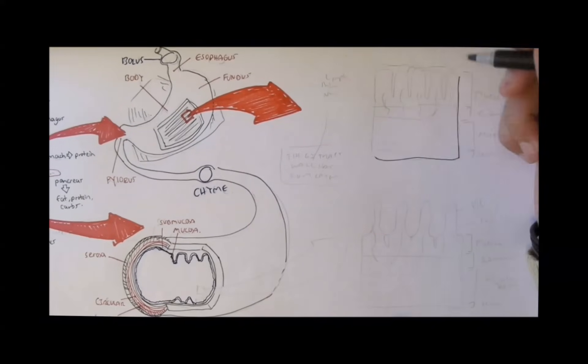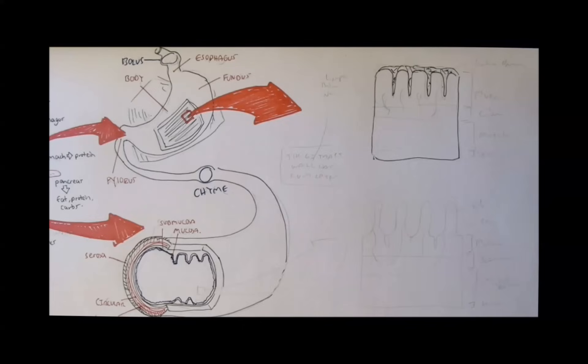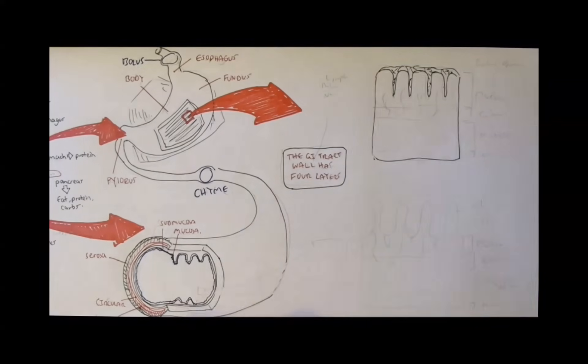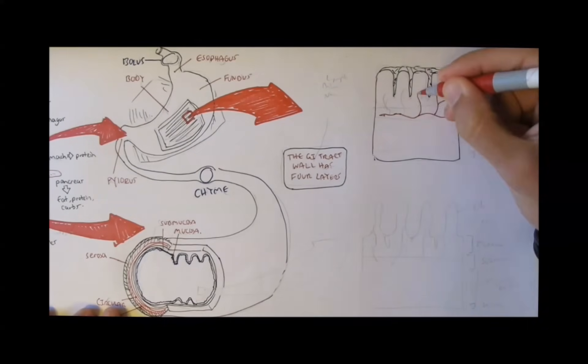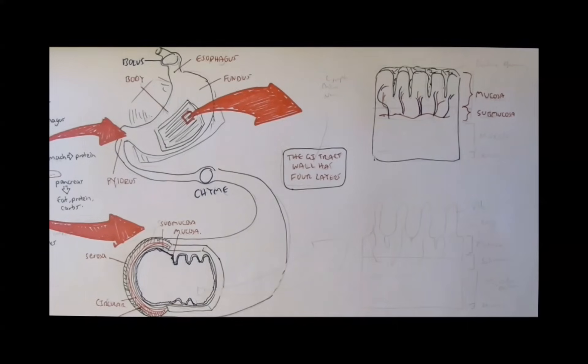And actually it is interesting to note that the gastrointestinal tract is actually all composed of four layers, the stomach included. Now the top bit of the stomach is called the mucosa and it secretes mucus, which is important in protecting the inside. And then there are crypts, which cells secrete enzymes and acid.